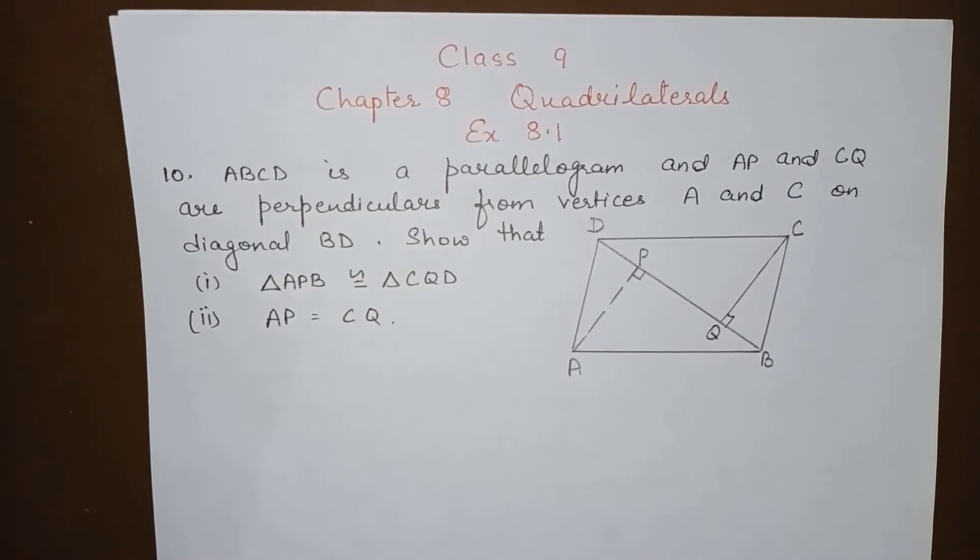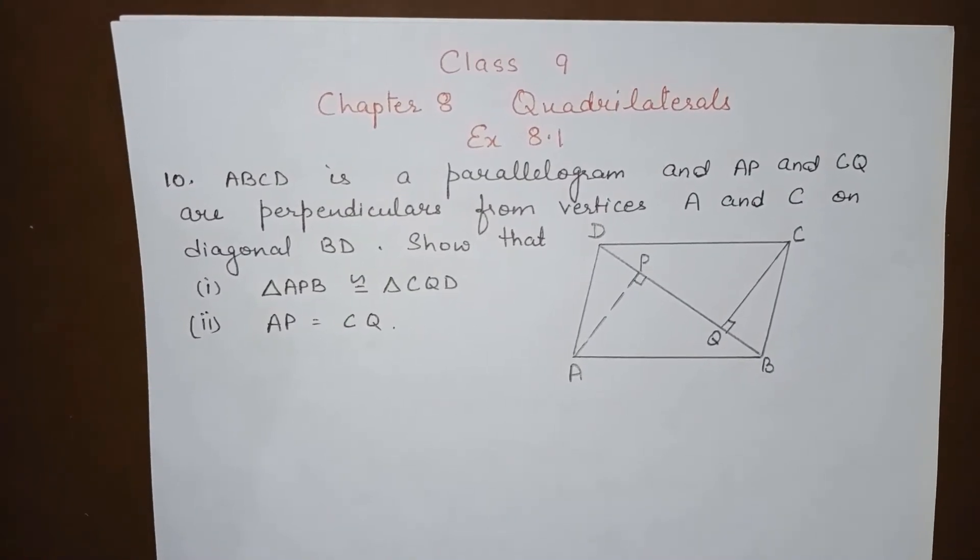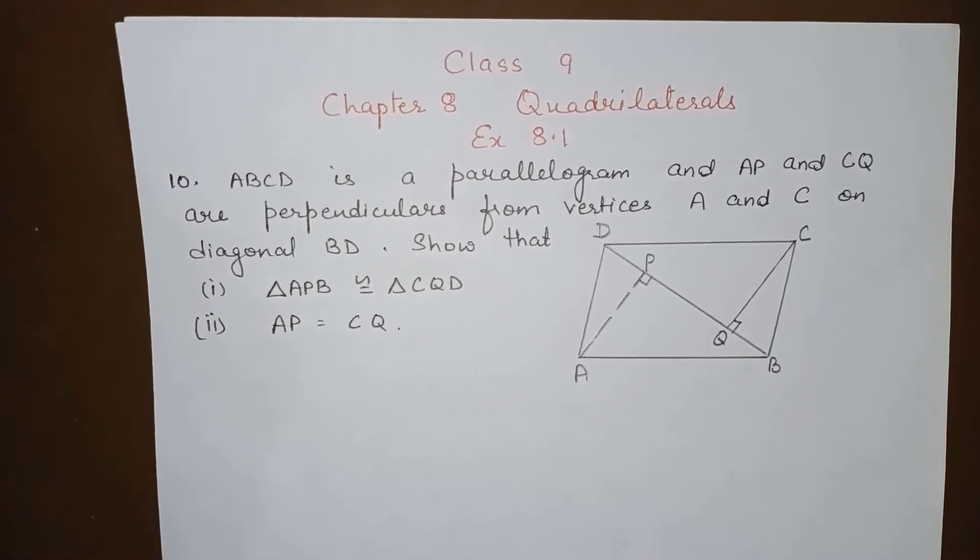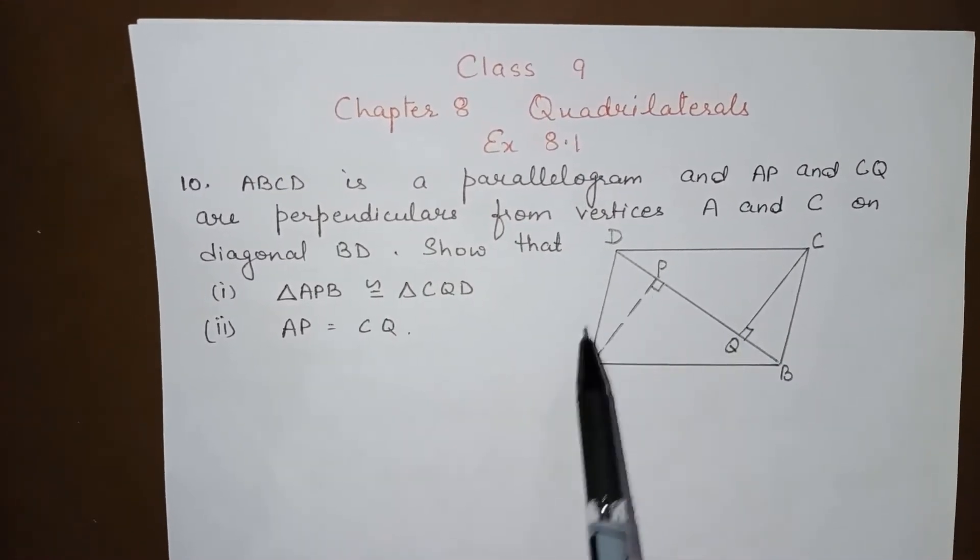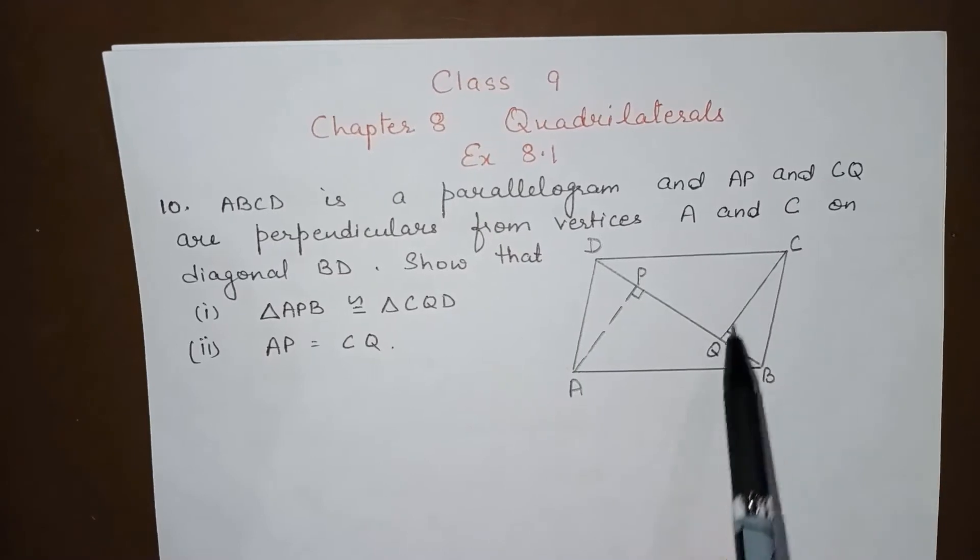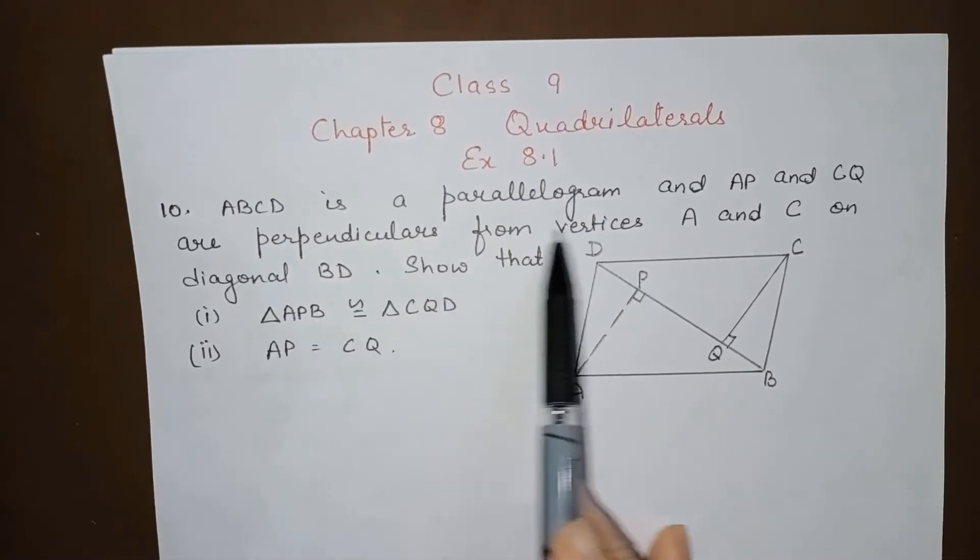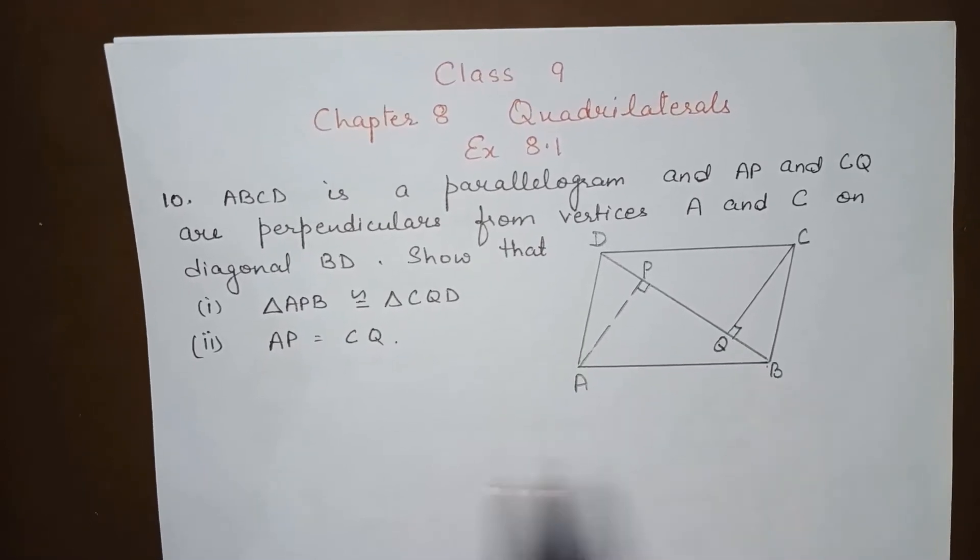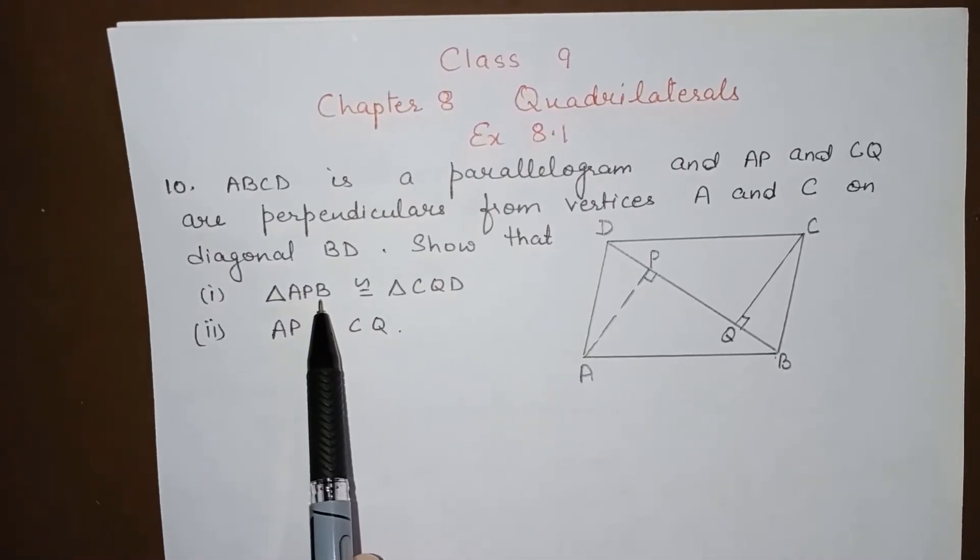Hello everyone, today we will do Class 9, Chapter 8 Quadrilaterals, Exercise 8.1, Question number 10. ABCD is a parallelogram and AP and CQ are perpendiculars from vertices A and C on diagonal BD. We have to show that triangle APB and triangle CQD are congruent.